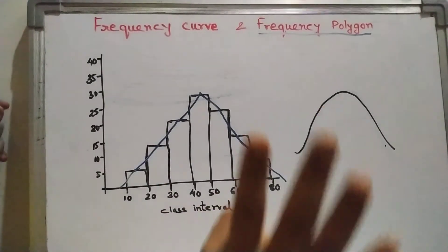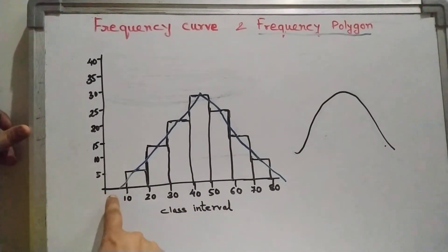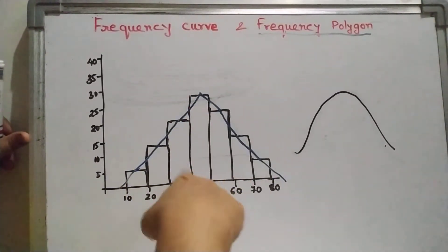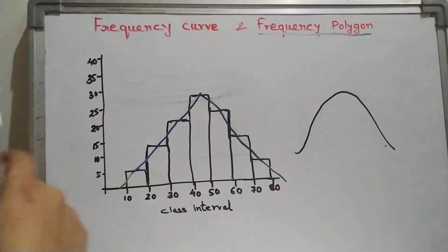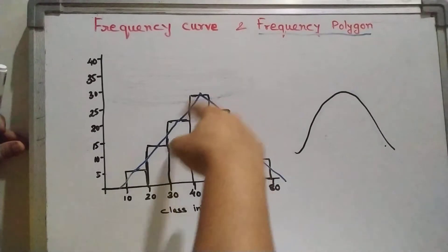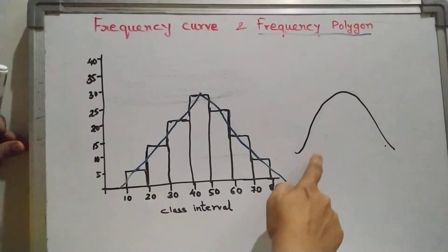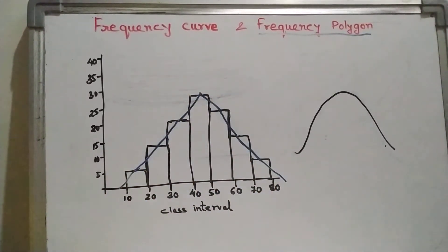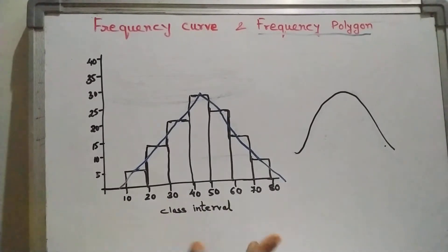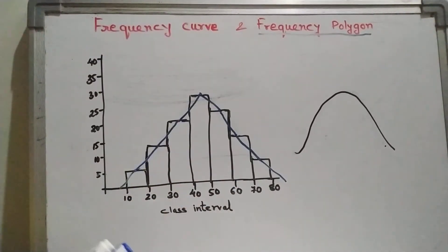The basic difference between the frequency curve and frequency polygon is that in a frequency polygon we join the dots by straight line segments, whereas for a frequency curve we join the points smoothly and get a smooth curve. For both, we first need to draw a histogram. From the histogram we can draw the curve directly, but it is better to draw the histogram first.